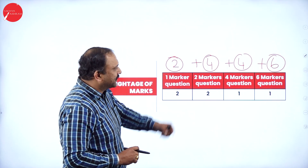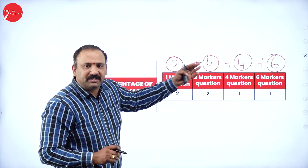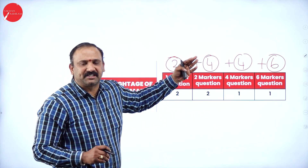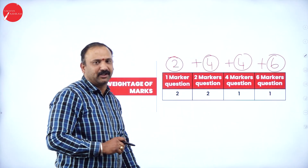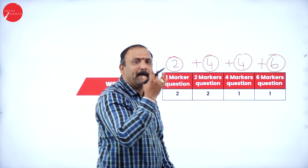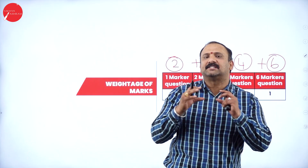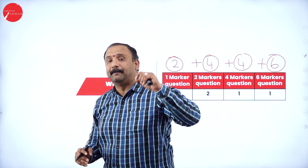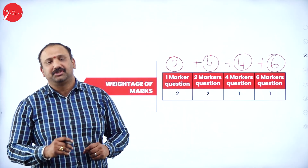So just look at that total there. If you look into this entire factor, you have 16 marks coming up from this particular chapter, because we have seen in the previous exams that there are certain questions which are being repeatedly asked from this chapter.